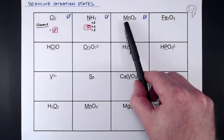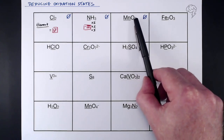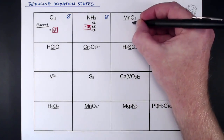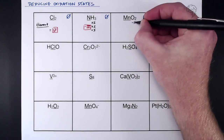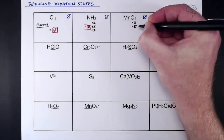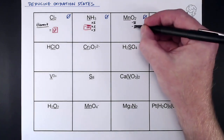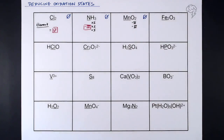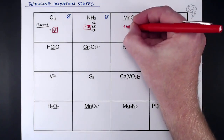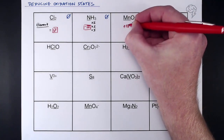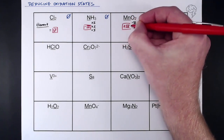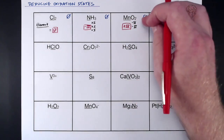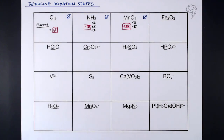On to MnO₂. Again, the overall oxidation state is zero. We're looking to find Mn, but we know oxygen most of the time has a -2 oxidation state. We've got two lots of -2 there, so to counteract those, the manganese must be +4. That's our oxidation state of manganese — to counteract the oxygen.